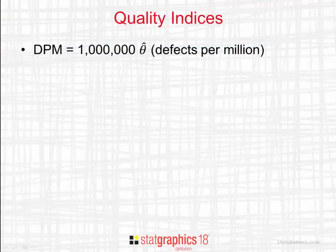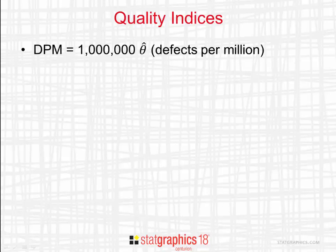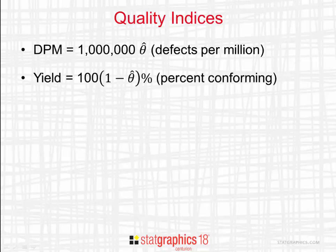It's also useful to take the estimated proportion of non-conforming items, theta hat, and calculate a number of quality indices. One widely used index is DPM, defects per million. That's just 1 million times theta hat. On the other hand, if I take theta hat, subtract it from 1, and multiply by 100, I get something called the yield. That's the percent of the items that conform to the specification limits.